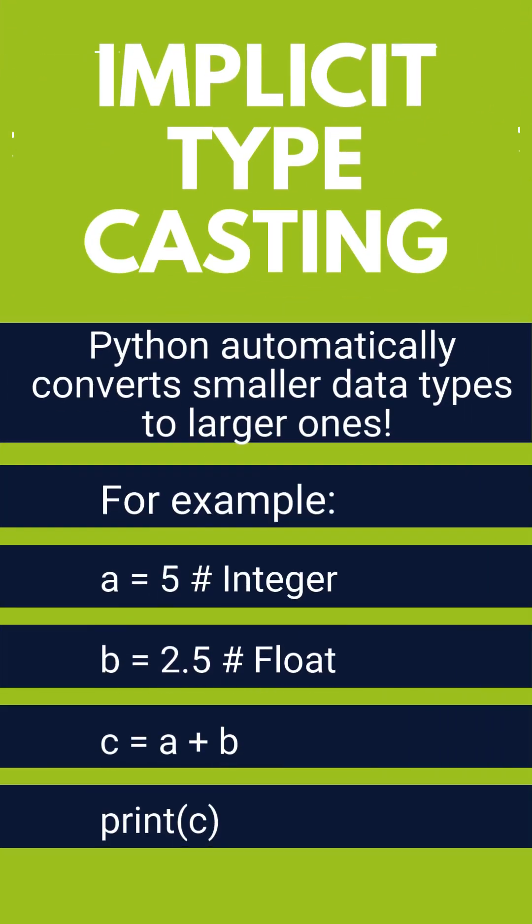Let us understand first implicit typecasting. When Python automatically converts the smaller data type to the larger one, it is known as implicit typecasting. For example,